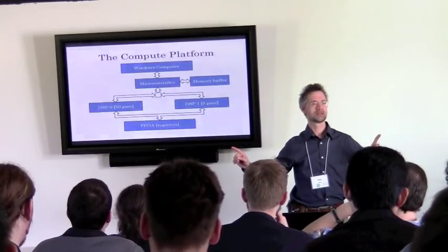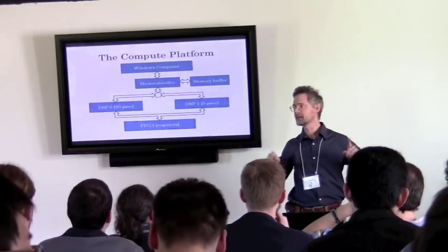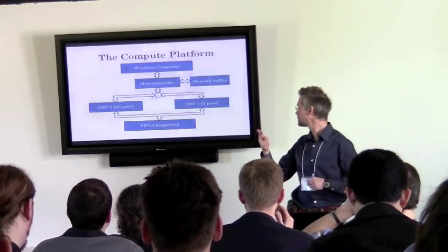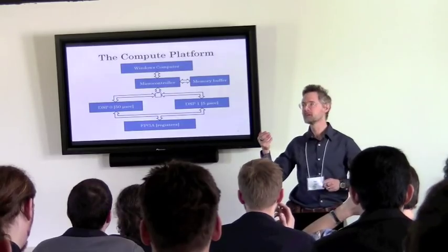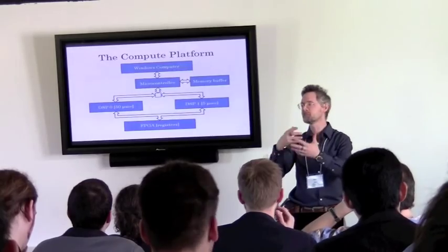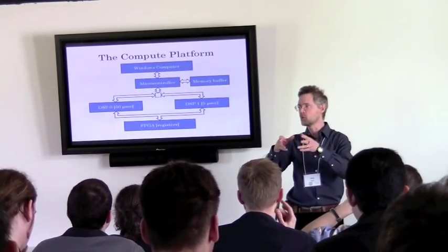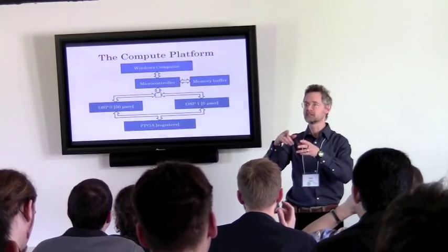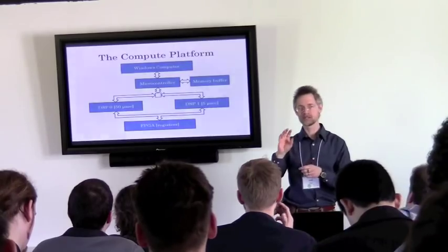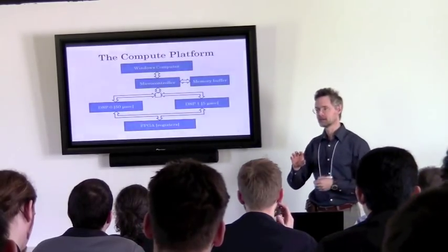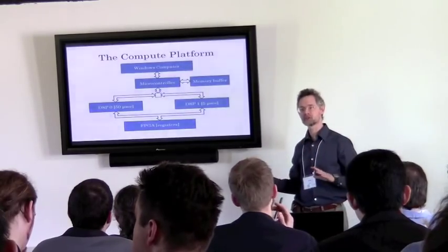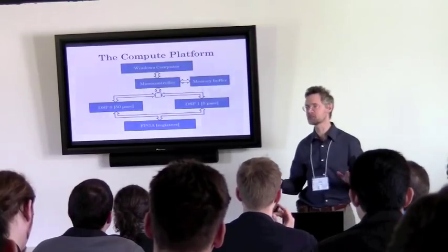An FPGA — Field Programmable Gate Array — is a bunch of hardware: gates, flip-flops, memories, all in one package that you can configure with software. The hardware team writes their FPGA code in Verilog or VHDL — languages the speaker has never learned. Reportedly they're much worse than C++.